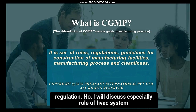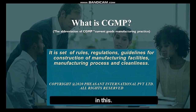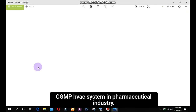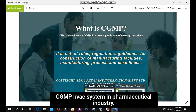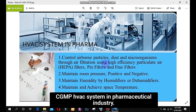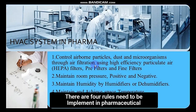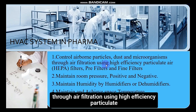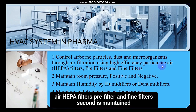Now I will discuss especially the role of the HVAC system in CGMP. In the pharmaceutical industry, there are four rules that need to be implemented. First is to control airborne particles, dust and microorganisms through air filtration using High Efficiency Particulate Air (HEPA) filters, pre-filters and fine filters.